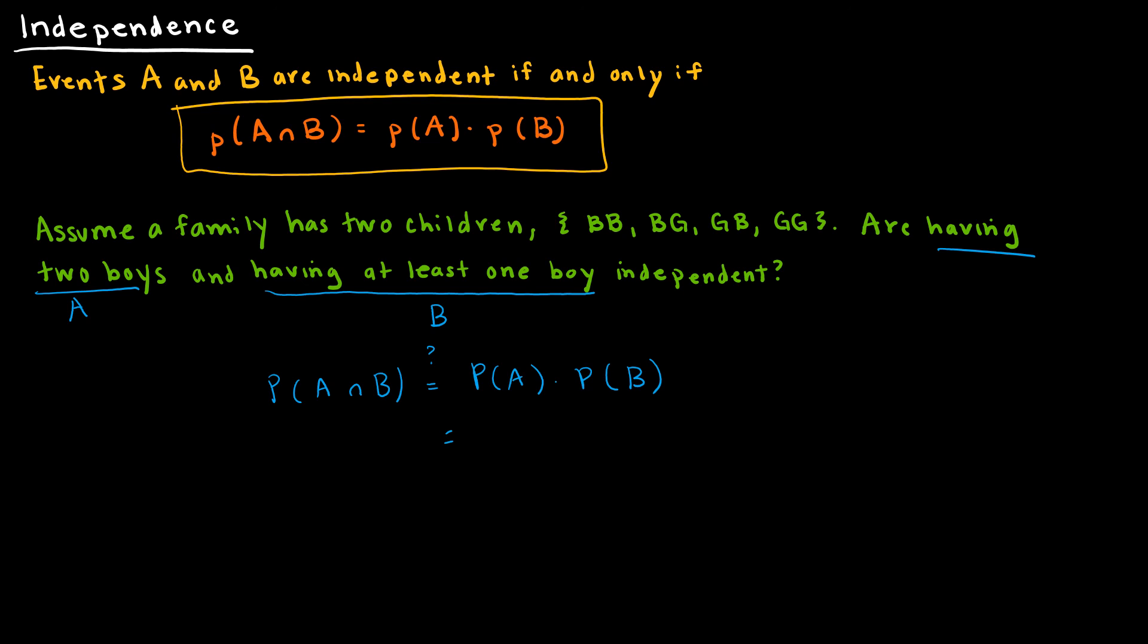Let's say this is event A and this is B. Using our formula, we're going to look at probability of A intersect B, and does that equal the probability of A times the probability of B? The probability of A is having two boys, and that is just 1/4. The probability of B is having at least one boy, so that's three options out of four. On the right side of my equation, I have 3/16.